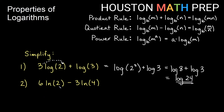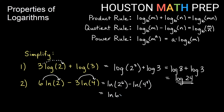For 6 times the natural log of 2 minus 3 times the natural log of 4, we move the 6 and 3 inside as exponents: ln of 2 to the 6th minus ln of 4 cubed. Since 2 to the 6th is 64, and 4 cubed is also 64, we get ln of 64 minus ln of 64. Something minus itself equals 0, so the answer is 0.